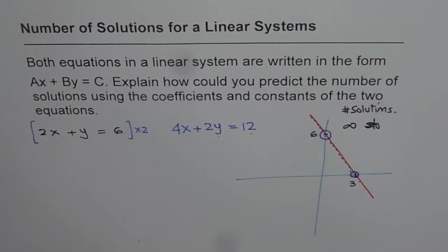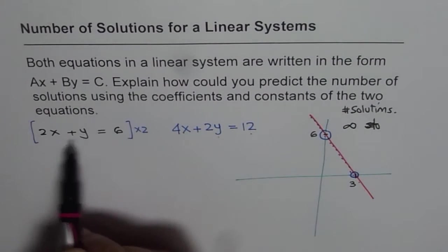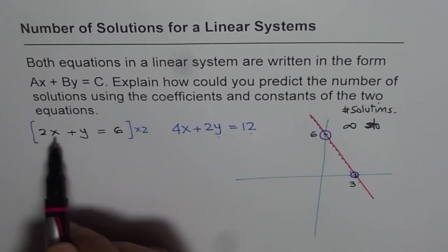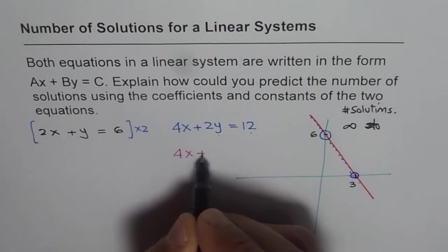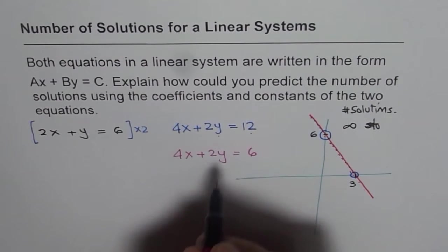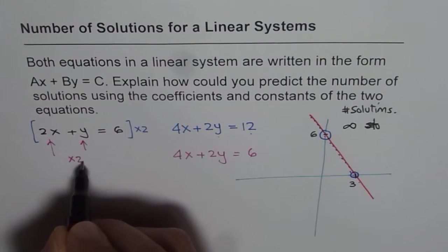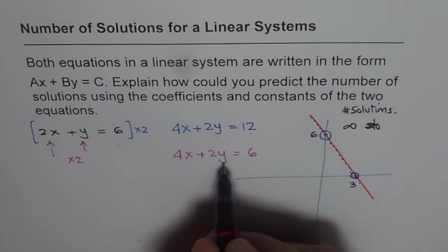Now, let's take another example. And this time, we are going to multiply only the coefficients by a number and not the constant. So we will multiply coefficients by 2. So we get next equation as 4X plus 2Y equals to 6. So we are multiplying only these two numbers by 2, not 6.